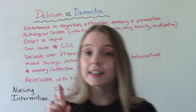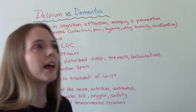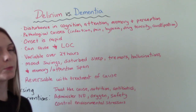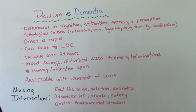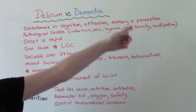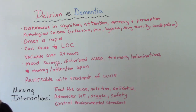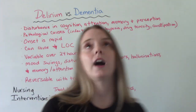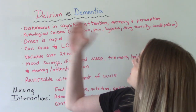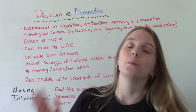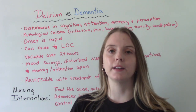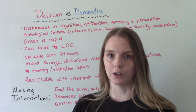Delirium causes disturbances in cognition, attention, memory, and perception for our patients. Both of these conditions are more likely to happen in the older adult.